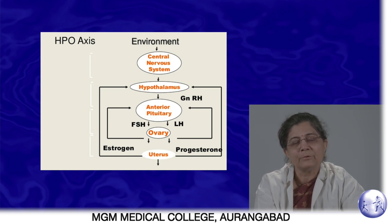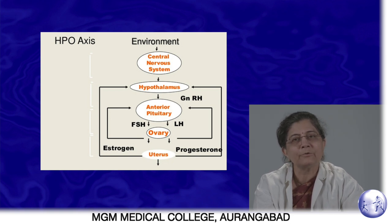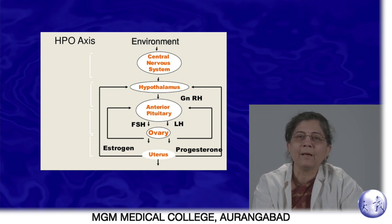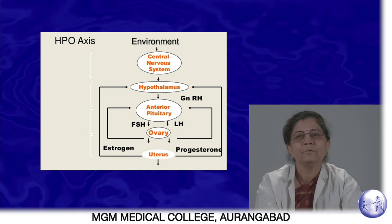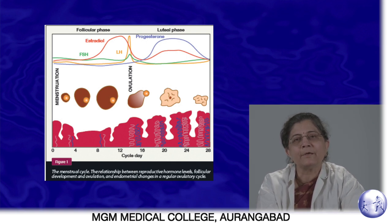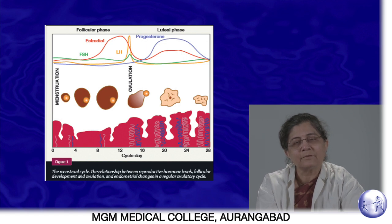The life of the corpus luteum is limited. In the absence of pregnancy or fertilization, the corpus luteum dies, resulting in loss of estrogen and progesterone secretion. The falling levels provide positive feedback to the pituitary, releasing FSH again. In this diagrammatic representation of the HPO axis, the FSH levels start rising before menstruation, so the growth of the next follicle already begins.